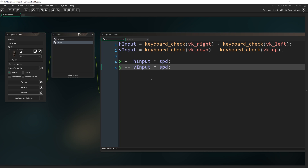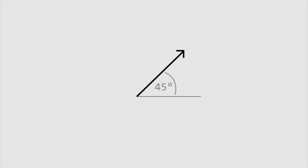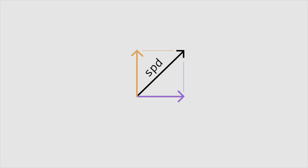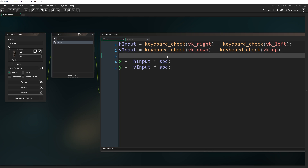We're going to use a bit of vectors, but there are built-in vector functions in Game Maker that make this really easy. A vector is just a line with a direction and a length or magnitude. What we need to do is get the direction we want to move, then calculate the length of that vector as if its length equaled our speed. Once we have that vector, we need to get the horizontal component and the vertical component — because in Game Maker we always manipulate XY coordinates.